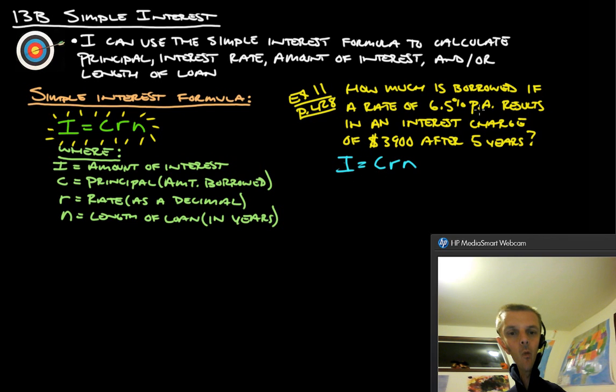So, we're looking for C. So, we know we're going to just leave that. And we have 0.065, that's your percent, for 5 years. Right? There's your 5 years. And your interest after those 5 years is $3,900. So, now we're going to try to figure out what the C is.